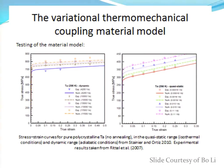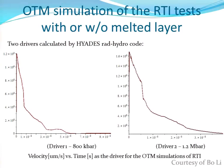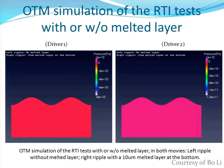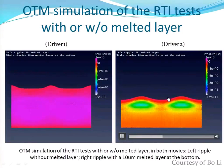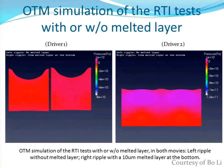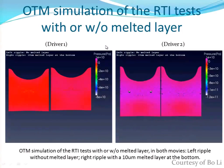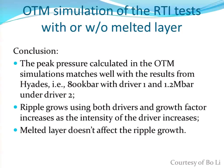This shows the material model we use for tantalum and the drive inputs from Hiates. We tested a few different drives that are possible at Omega. The one on the left doesn't have a melt layer, and the one on the right does — right on the bottom. What you end up seeing is that the melt layer they would have expected doesn't actually affect the growth of the ripple, so they didn't have to worry about that in the design of their experiments. We also confirmed that as we increase the drive, we increase the ripple growth.